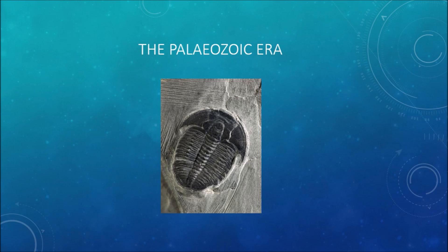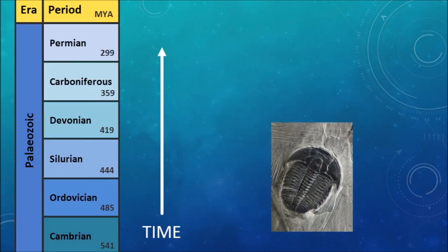We divide the Paleozoic into six periods: Cambrian, Ordovician, Silurian, Devonian, Carboniferous, Permian. You don't have to remember these names, although it might help you in a quiz one day.